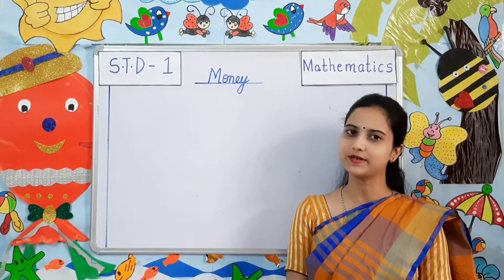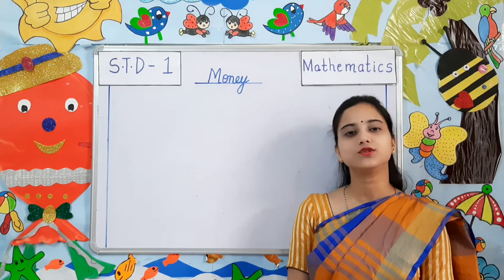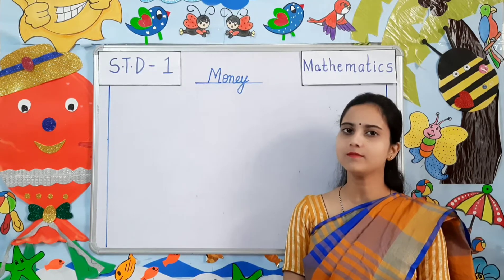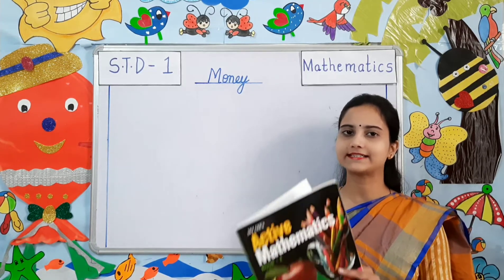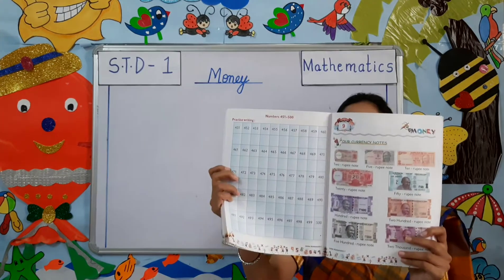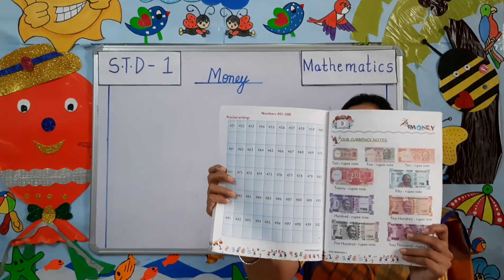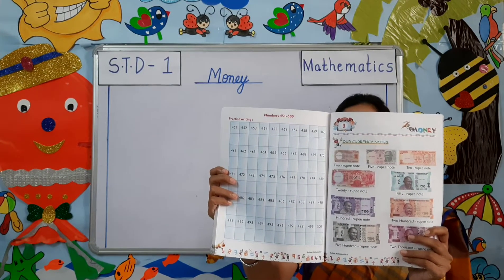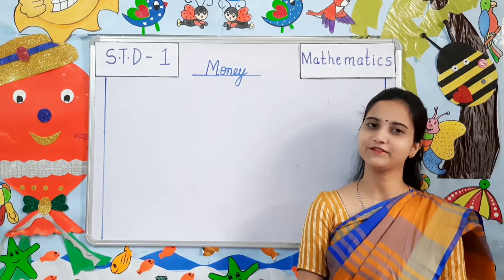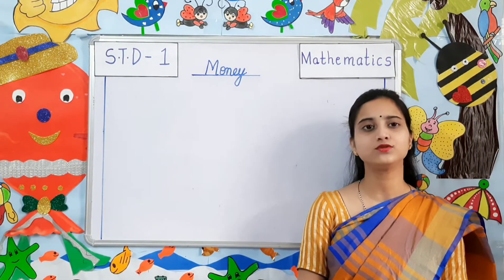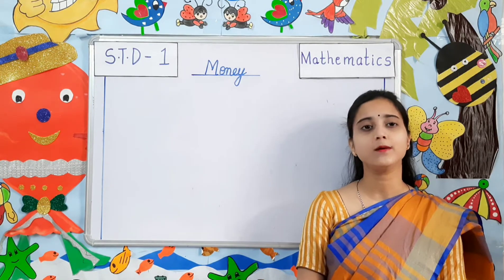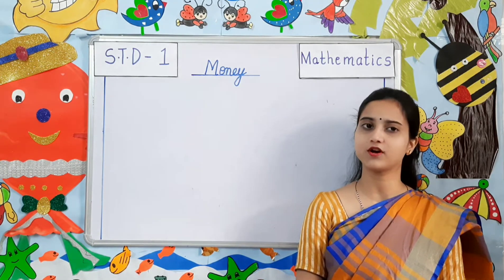Hello students and welcome parents. Today I am going to teach you mathematics from your active mathematics book, chapter 9, page 123 — Money. Money is important for us. We need money to buy things in our day-to-day life.